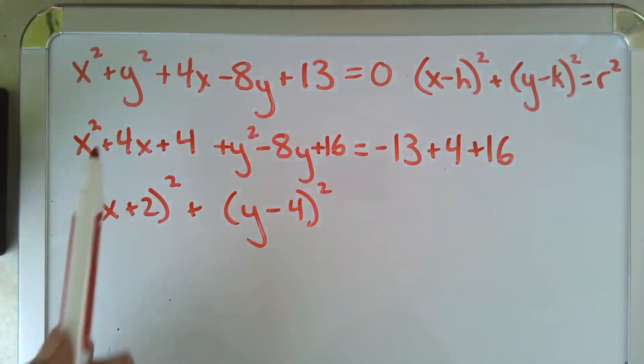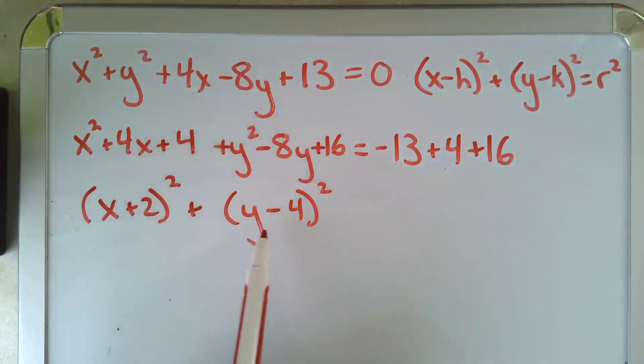And by the way, just to be clear, we have not changed anything here. We just wrote it in a different form. Same thing. If we were to foil these two out, this one equals this and this one equals that.